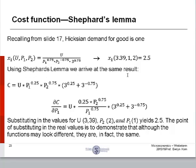Now, using Shepard's Lemma, we arrive at the same result. We have our cost function. We derive it with respect to P1, and this is what we get, this wonderful equation. Substituting in the values for U, 3.39, P2, which is 2, and P1, which is 1, it also yields 2.5.